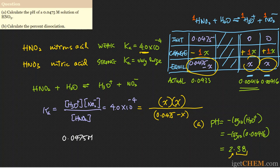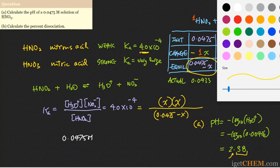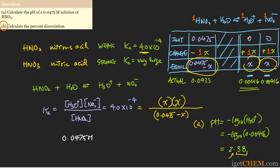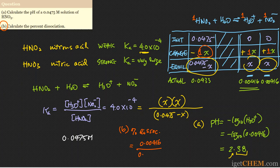For part B, we calculate the percent dissociation, which is how much has dissociated relative to the initial amount. The amount dissociated equals x = 0.00416. Percent dissociation = 0.00416 / 0.0475 = 0.0875, which is 8.8%. We use two significant figures to reflect the correct precision.